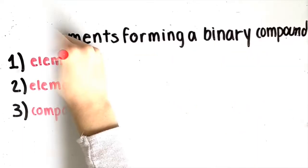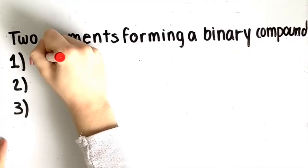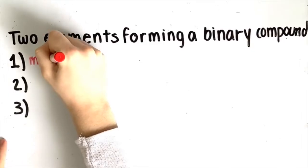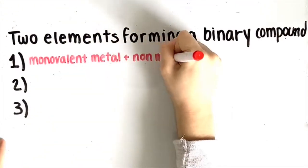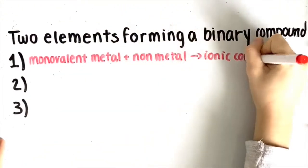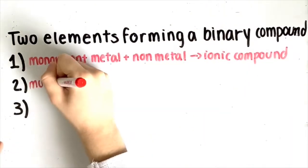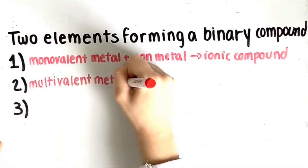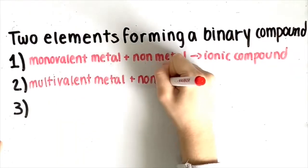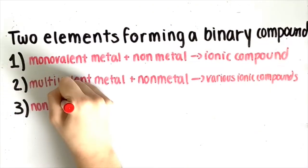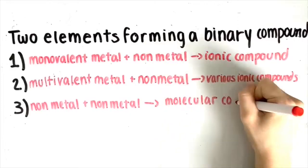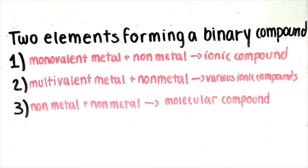There are three different ways that two elements can form a binary compound. A monovalent metal reacts with a nonmetal to form an ionic compound, a multivalent metal reacts with a nonmetal to form various ionic compounds, and two nonmetals combine to form a molecular compound.